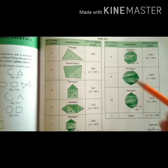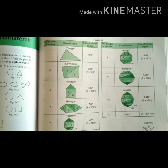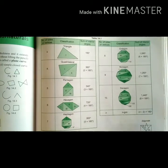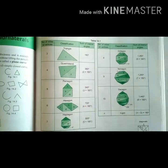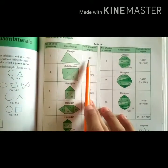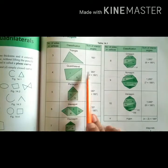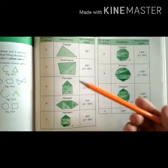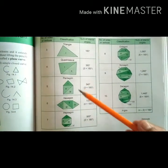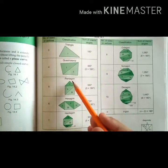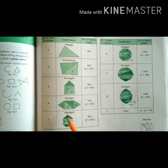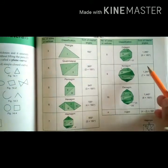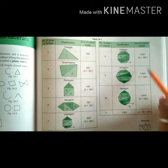Decagon has 10 sides. As the number of sides increases, the size increases, and the sum of interior angles increases. A triangle has 3 angles with sum 180 degrees, and a quadrilateral has 4 angles with sum 360 degrees. Remember: penta means 5, hexa means 6, hepta means 7, octa means 8, nona means 9, deca means 10.